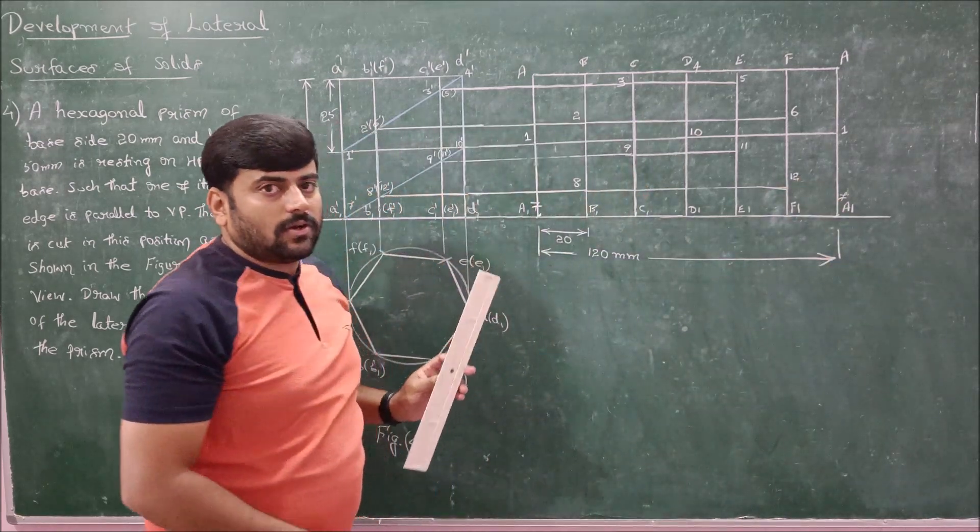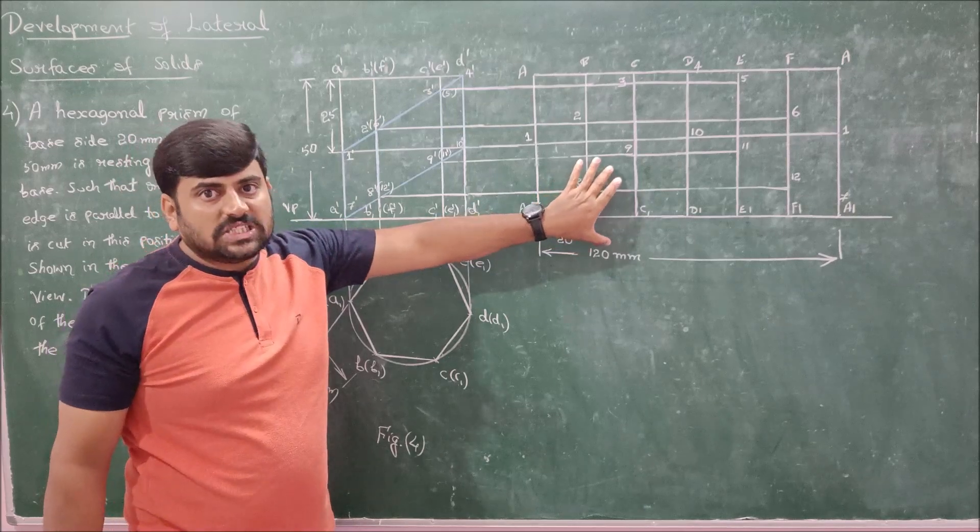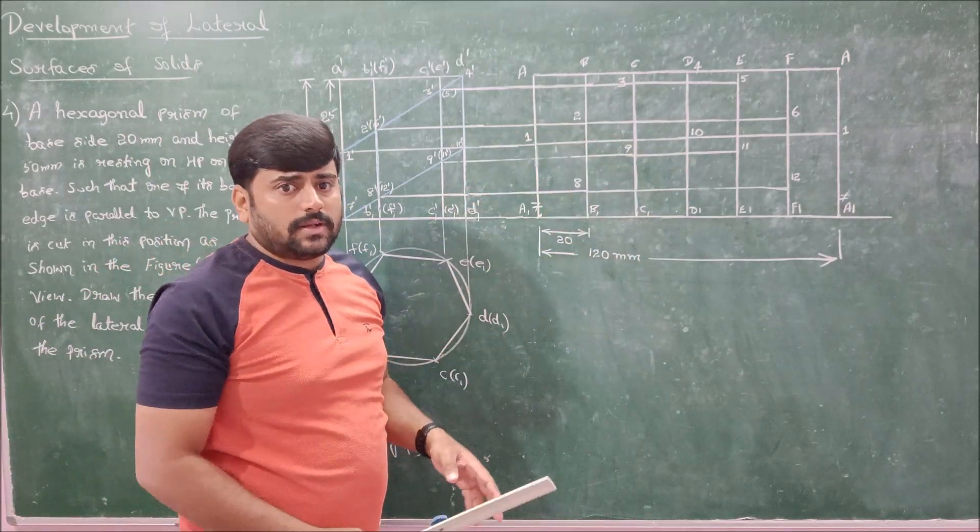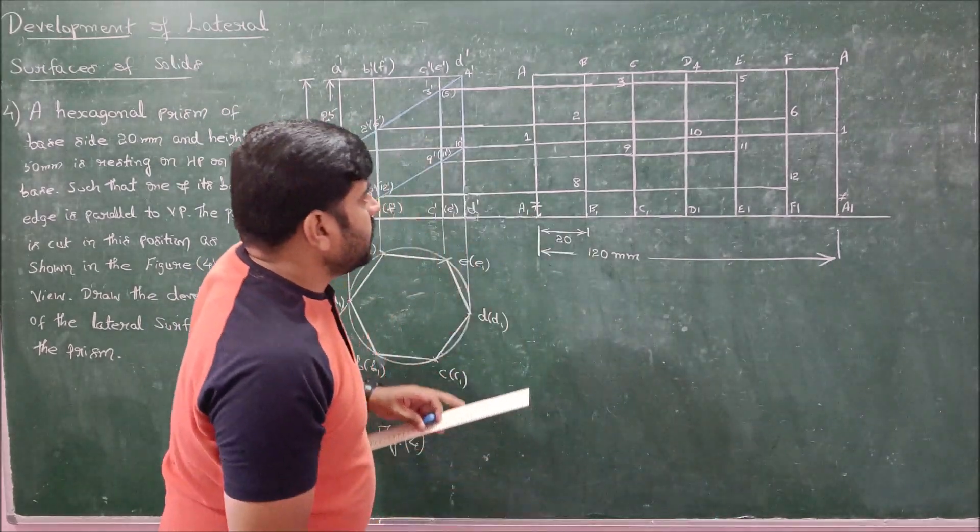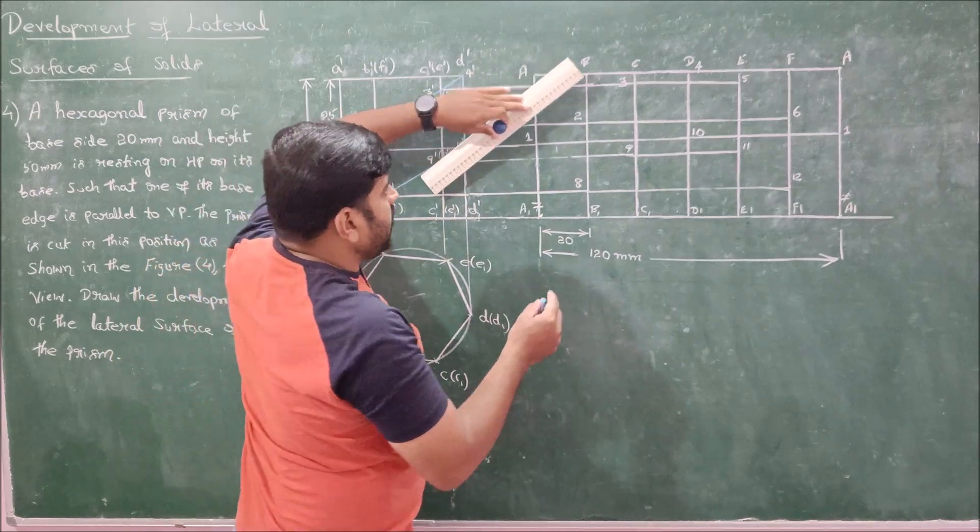This completes transferring of all the salient points of this cutting plane into the unfolded hexagonal prism. Now connect these points that will complete the development. Let me use different chalk to bifurcate between the unfolded hexagonal prism and the development what we have.